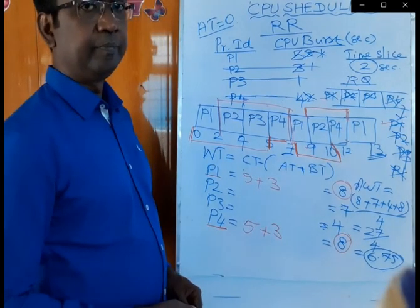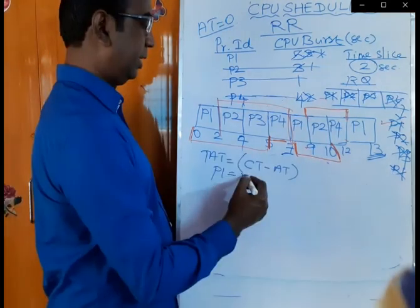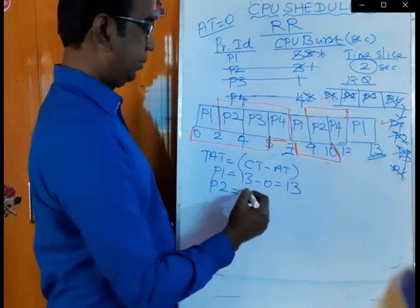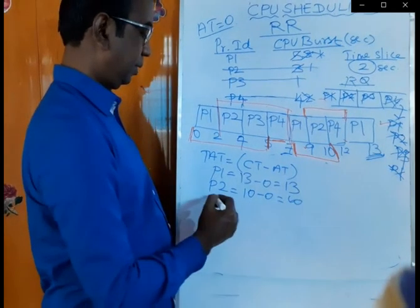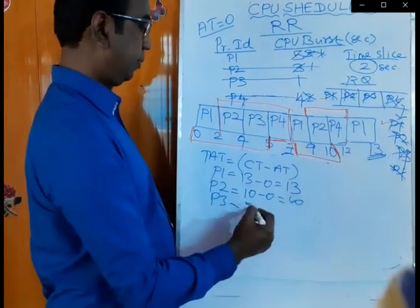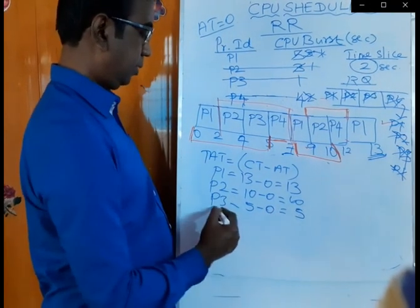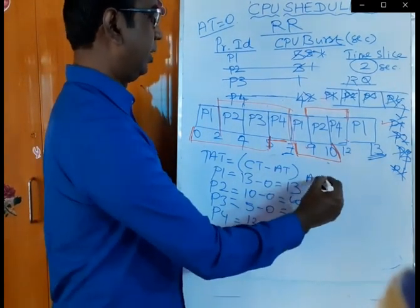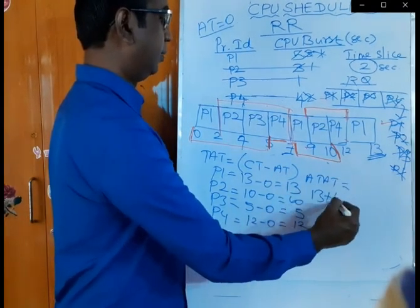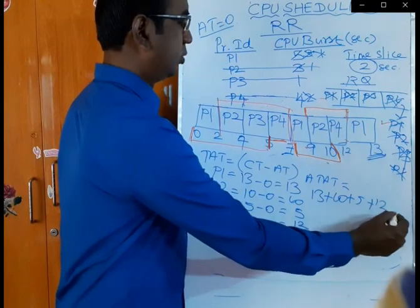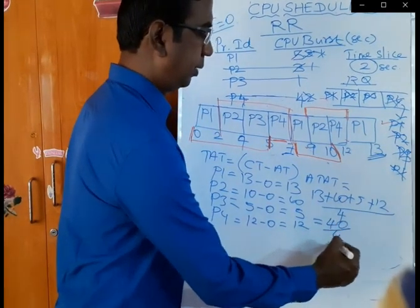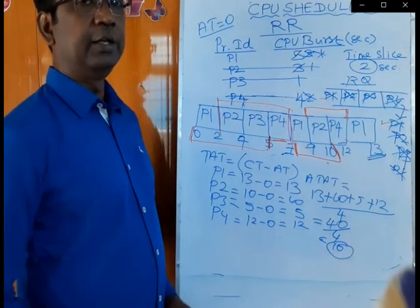The turnaround time formula is simply completion time minus arrival time. For P1, completion time is 13, minus 0 equals 13. For P2, completion time is 10, minus 0 equals 10. For P3, last appearance is 5, minus 0 equals 5. For P4, 12 minus 0 equals 12. So average turnaround time is (13 plus 10 plus 5 plus 12) divided by 4, which equals 40 divided by 4, equals 10.